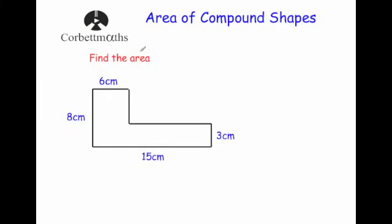Our first example: find the area of this L-shaped compound shape, which is made up of two rectangles. Before we start, let's find the missing sides.